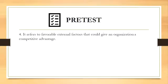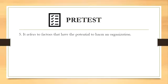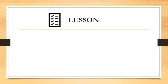Number four: it refers to favorable external factors that could give an organization a competitive advantage. A) strengths, B) weaknesses, C) opportunities, D) none of the above. The answer is D, none of the above — the right answer for this is threats. Now let's proceed to our formal discussion.